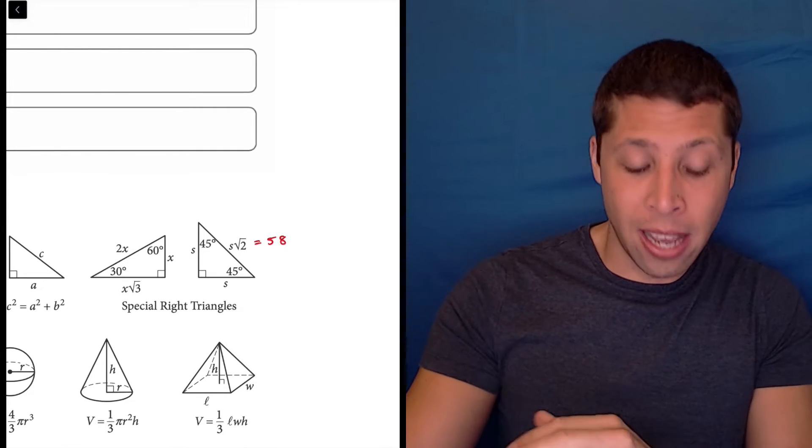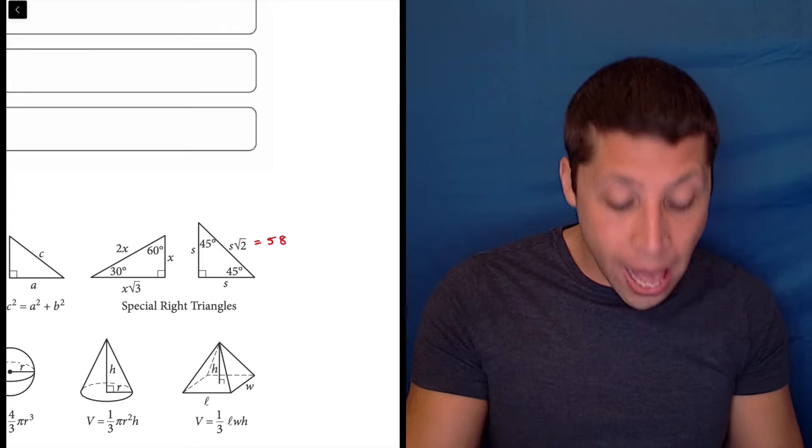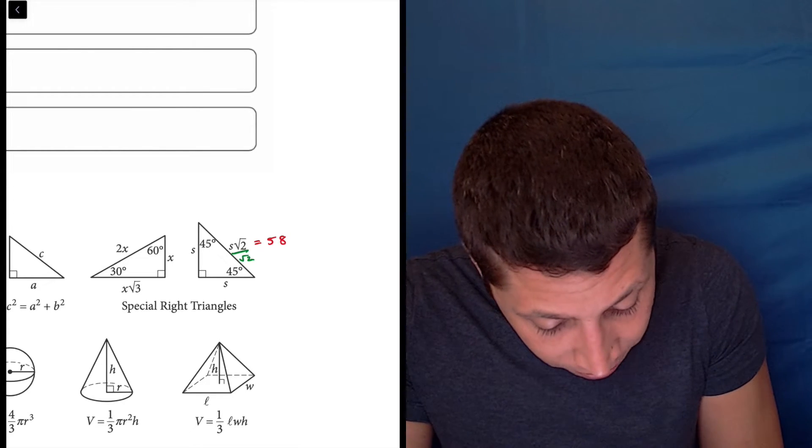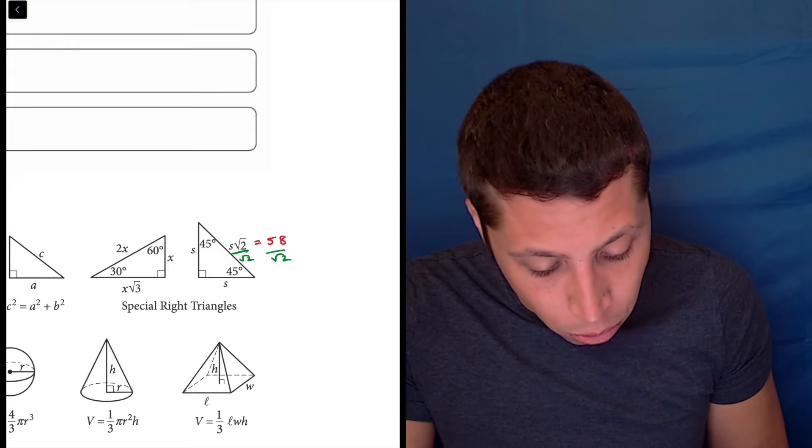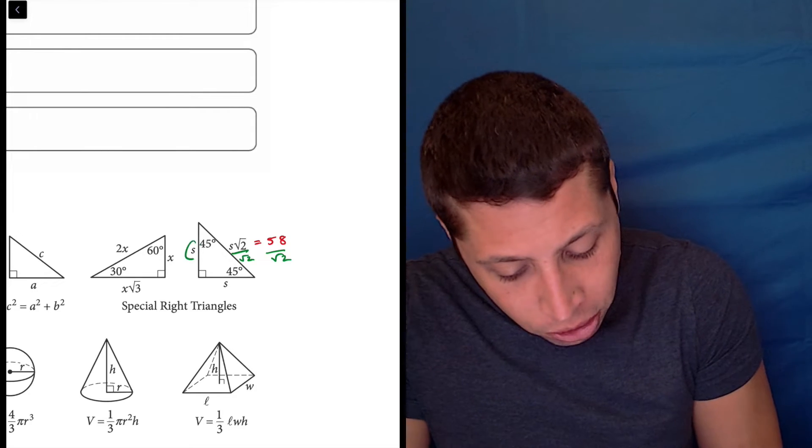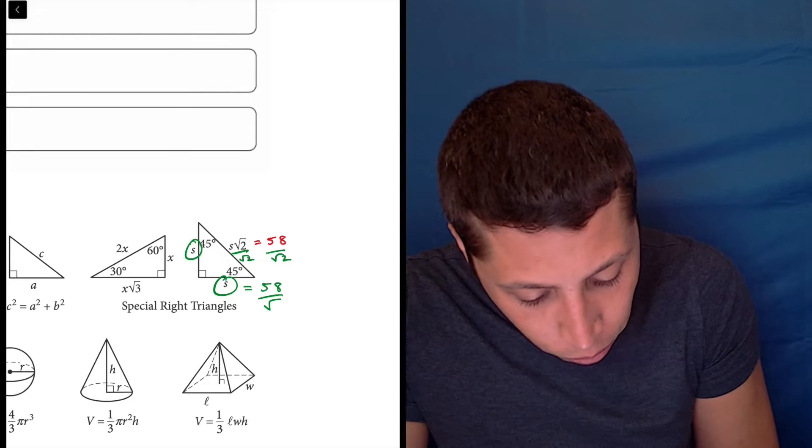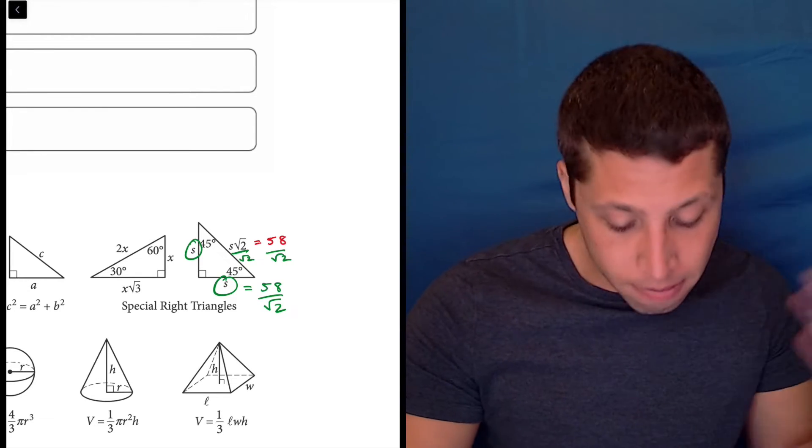Well, it's multiplied in and we can find the value of s by dividing it out. So if we just divide both sides of this thing by radical 2, we will get that the other side, these sides, are equal to 58 over radical 2, which is a messy number, but not a big deal.